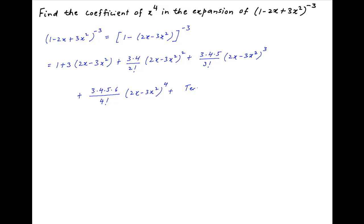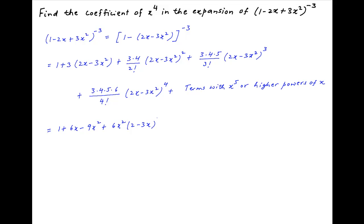Notice that all subsequent terms will involve x raised to the power 5 or higher powers of x. This expression can be simplified to 1 plus 6x minus 9x square plus 6x square times (2 minus 3x) whole square plus 10x cube multiplied by (2 minus 3x) raised to the power 3.